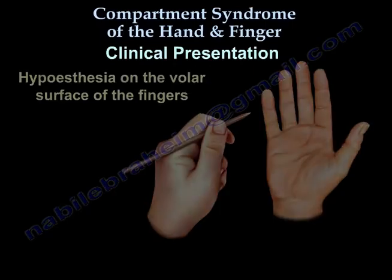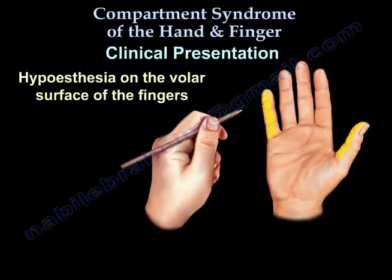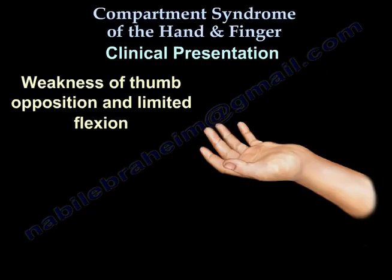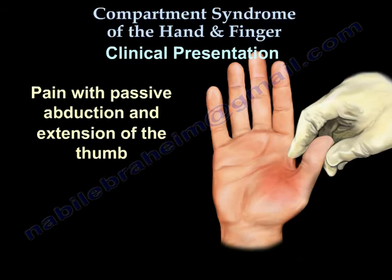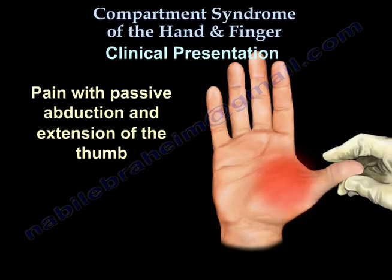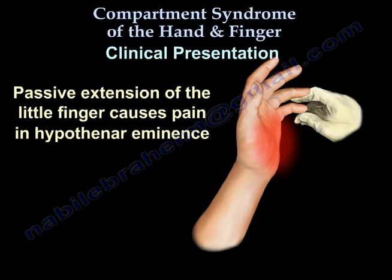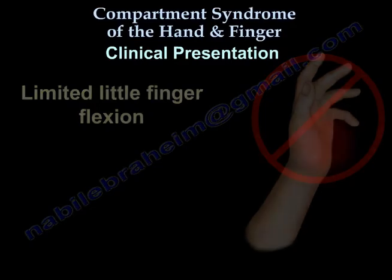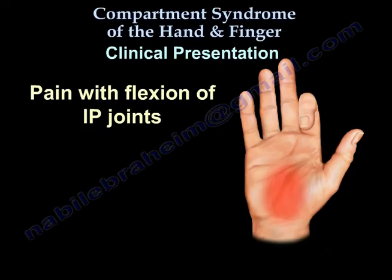Clinical presentation of the hand: hypothesia on the volar surface of the fingers, tenderness in the palm, weakness of thumb opposition and limited flexion, pain with passive abduction and extension of the thumb, passive extension of the little finger causes pain in the hypothenar eminence, limited little finger flexion, intrinsic plus hand deformity with flexion of MCP joints and extension of IP joints, and pain with flexion of IP joints.